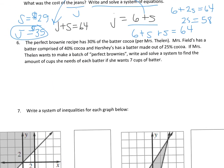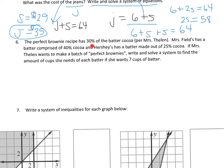And then number 6. The perfect brownie recipe has 30% of the batter cocoa. So cocoa is 30% of the batter. Mrs. Fields has a batter comprised of 40% cocoa, and Hershey's has a batter made out of 25% cocoa. If Mrs. Thielen wants to make the perfect batch of brownies, write and solve a system to find the number of cups she needs of each batter if she wants 7 cups of batter. So this is a mixture problem where you want to compare the amount of batter that we need. So amount of each batter.